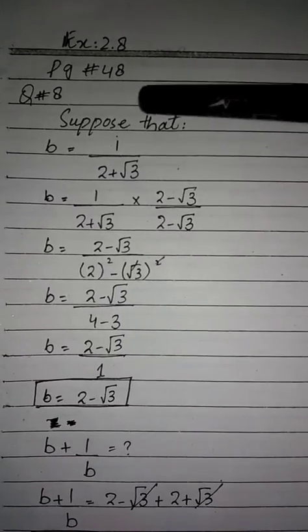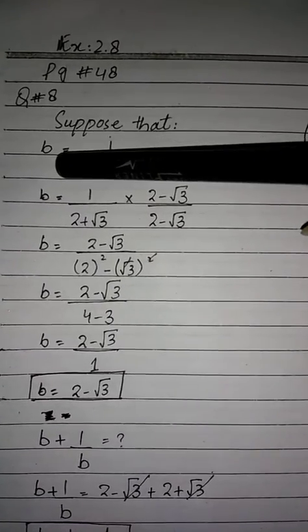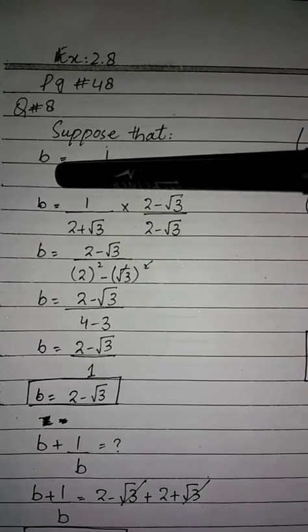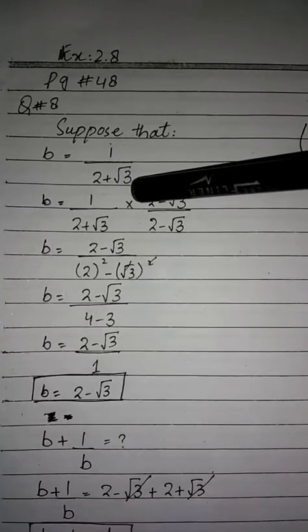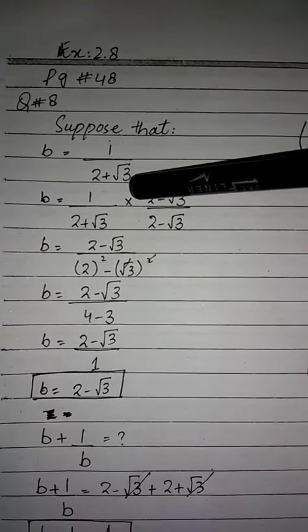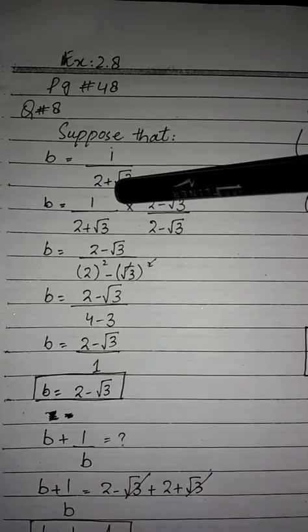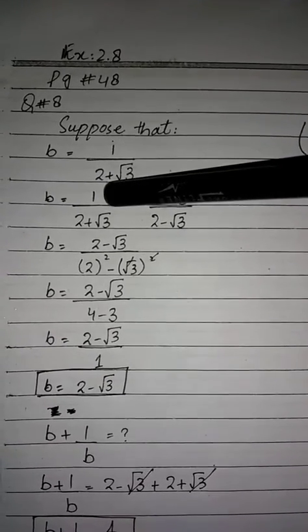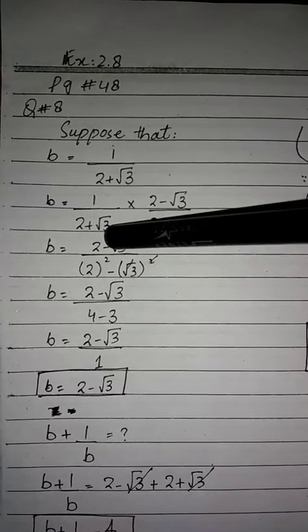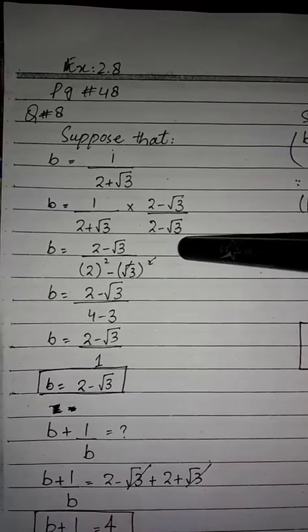So students, first of all, suppose we have 1 over b is equal to 1 over 2 plus root 3. If we rationalize it, we will multiply and divide by 2 minus root 3. So 1 over (2 plus root 3) multiplied by (2 minus root 3) divided by (2 minus root 3).